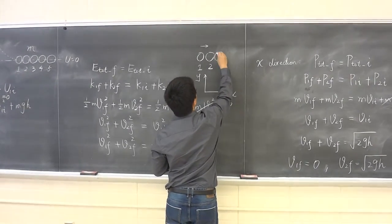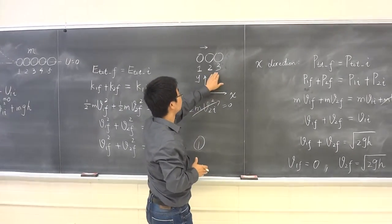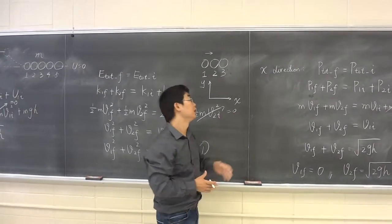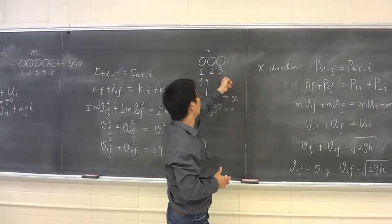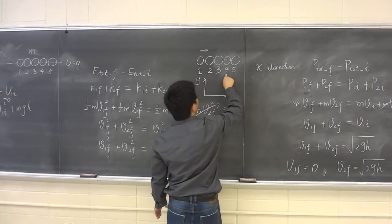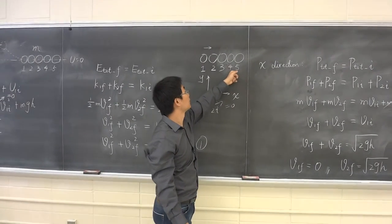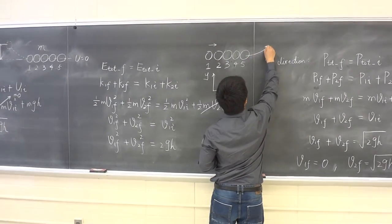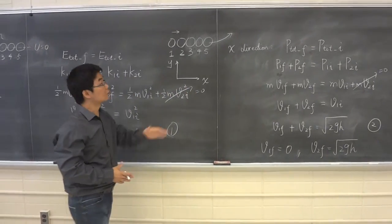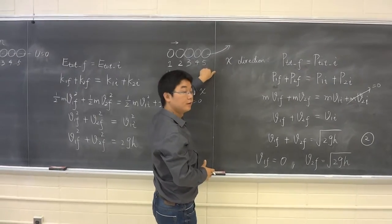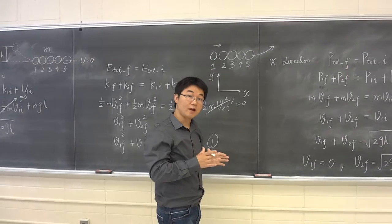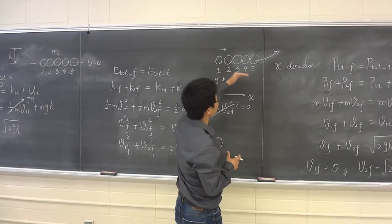Immediately the second ball strikes the third ball, and this collision is the same as the one between balls one and two. So without doing any math, we know that after this collision the second ball stops and the third ball starts to move to the right with the same velocity. It just goes on and on until the fourth ball strikes the fifth ball. After that collision the fourth ball stops, and the fifth ball swings to the right with the initial velocity of square root of 2gH. That's why the fifth ball can reach the same height as where I released the first ball.